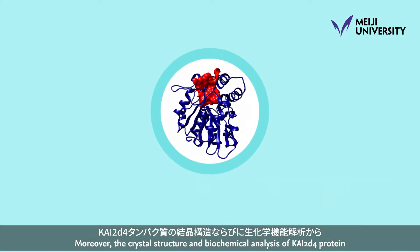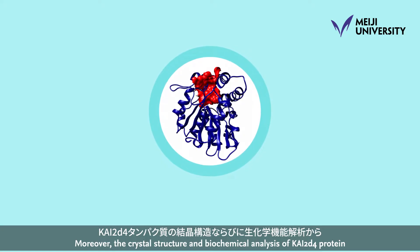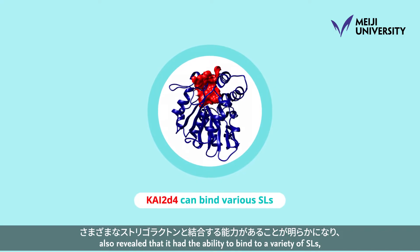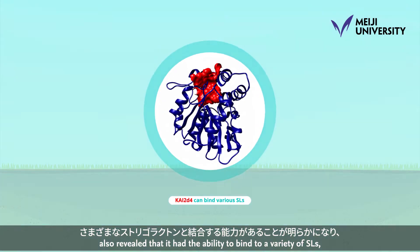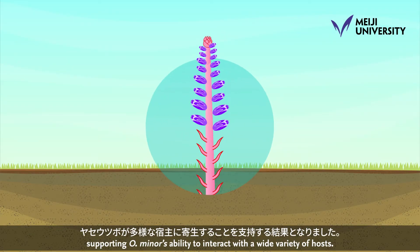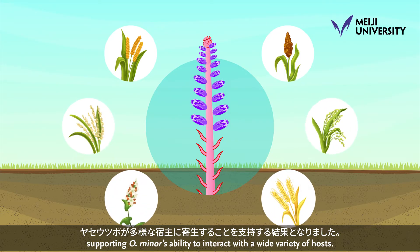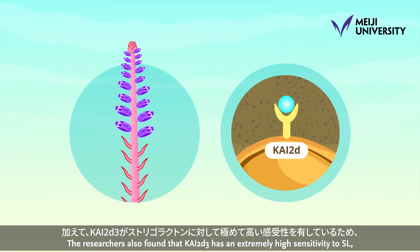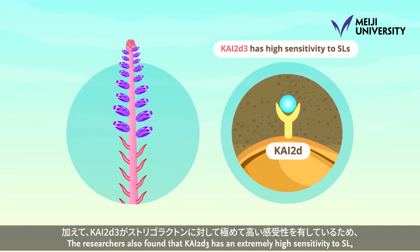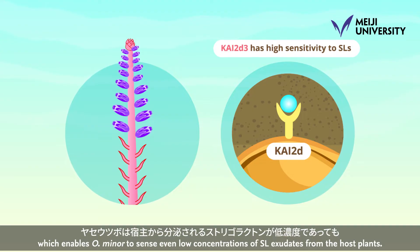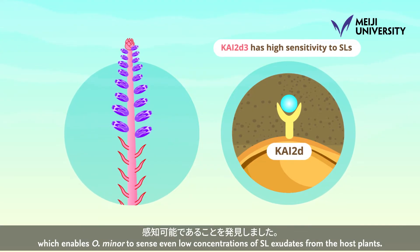Moreover, the crystal structure and biochemical analysis of CHI2D4 protein revealed that it had the ability to bind to a variety of SLs, supporting O. minor's ability to interact with a wide variety of hosts. The researchers also found that CHI2D3 has an extremely high sensitivity to SL, which enables O. minor to sense even low concentrations of SL exudates from host plants.